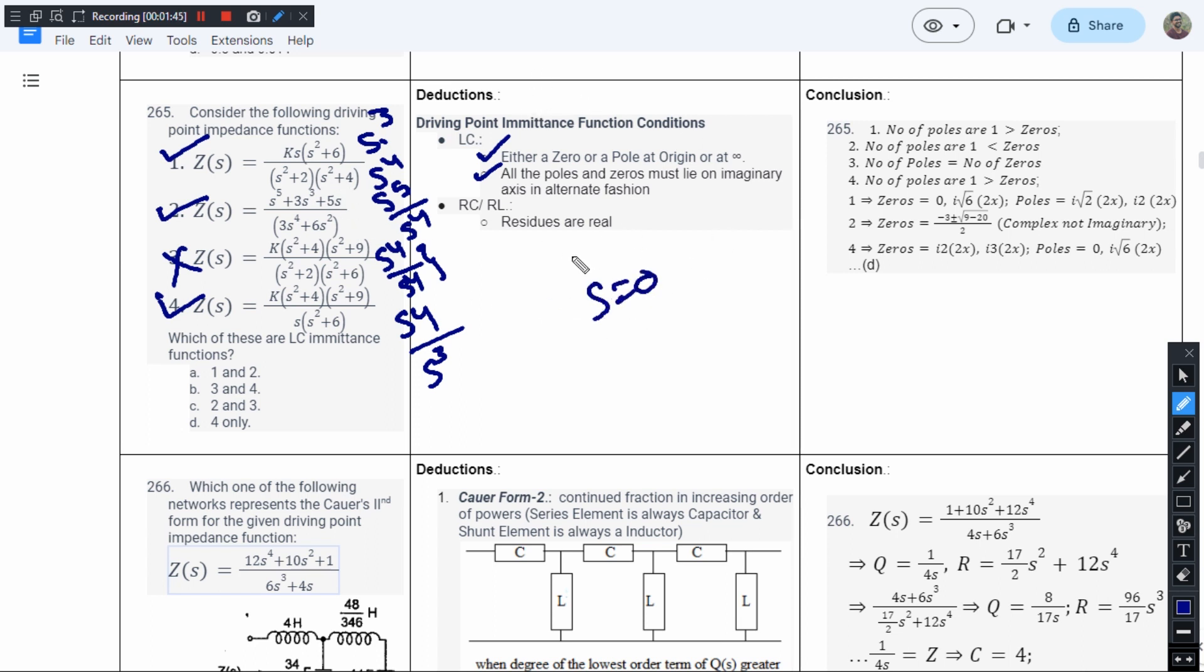So for the first one, s equals zero and s equals 2i√6. And for the second, we will have minus b plus or minus √(b² - 4ac) / 2a.